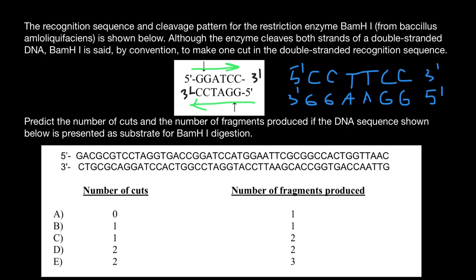As you can see, GGAAGG is not the same sequence as the original strand's CCTTCC. So this is not a palindromic sequence. The complementary strand reads differently from five prime to three prime, confirming that CCTTCC is not palindromic.